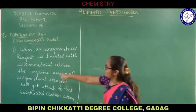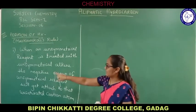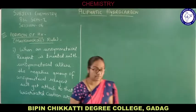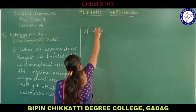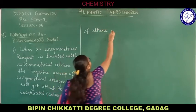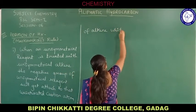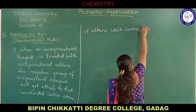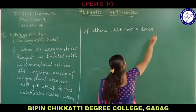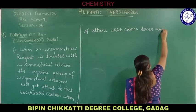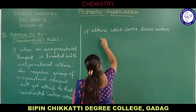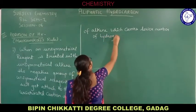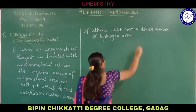The negative group of the unsymmetrical reagent will get attached to that unsaturated carbon atom of alkene which carries a lesser number of hydrogen atoms. Let us understand this statement now.